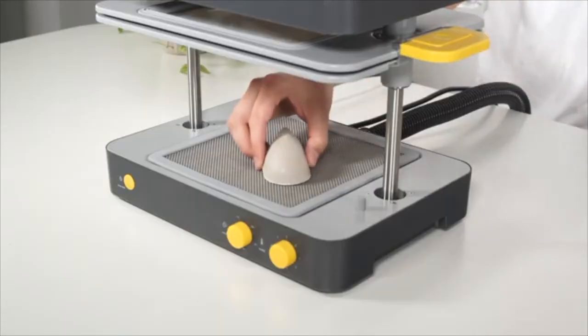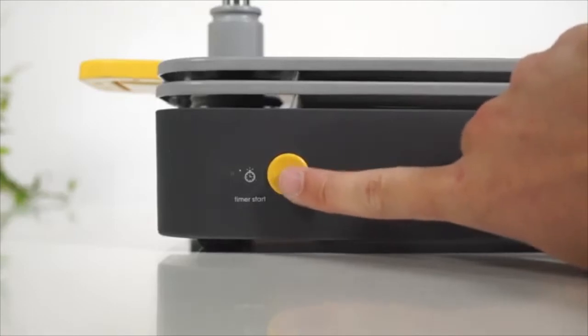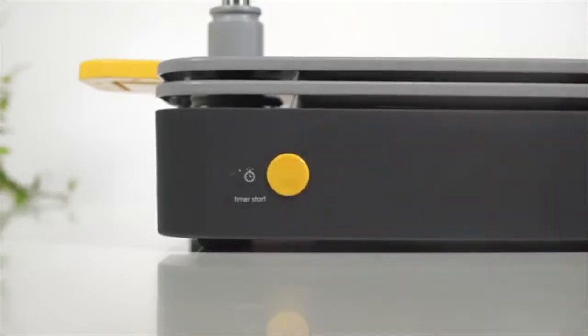Place the object to be formed in the center of the form box bed. Press the timer start button to start the countdown. You will hear the timer start to click faster when your sheet is almost ready.